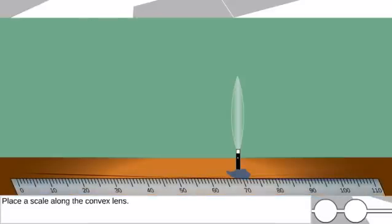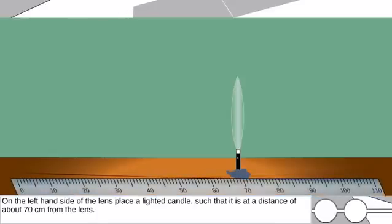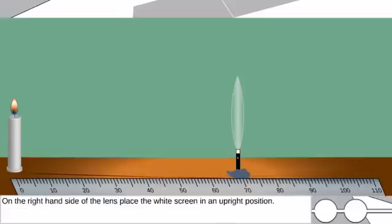Place a scale along the convex lens. On the left hand side of the lens, place a lighted candle such that it is at a distance of about 70 cm from the lens. On the right hand side of the lens, place the white screen in an upright position.